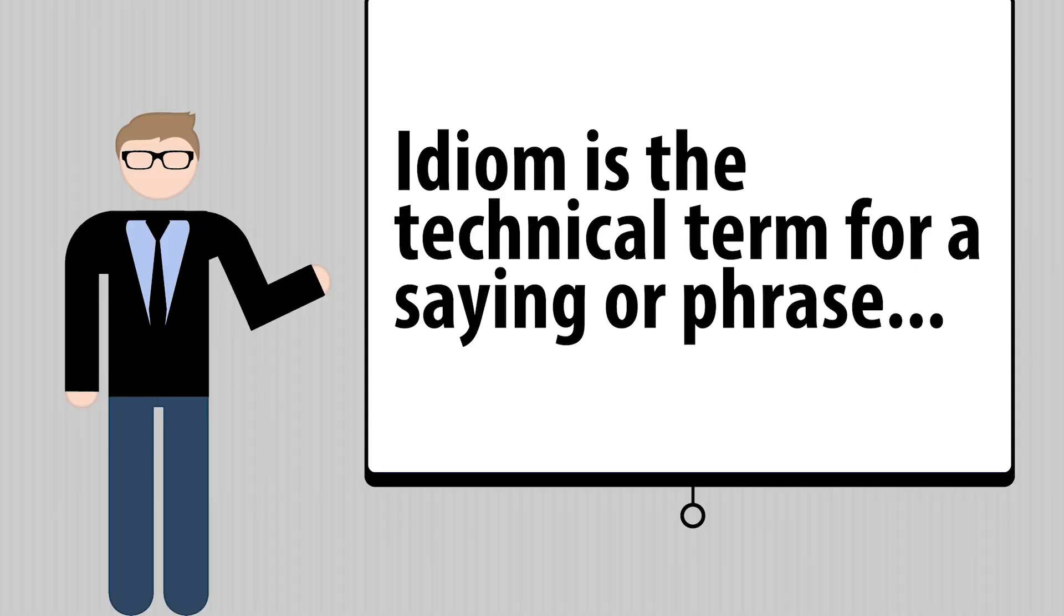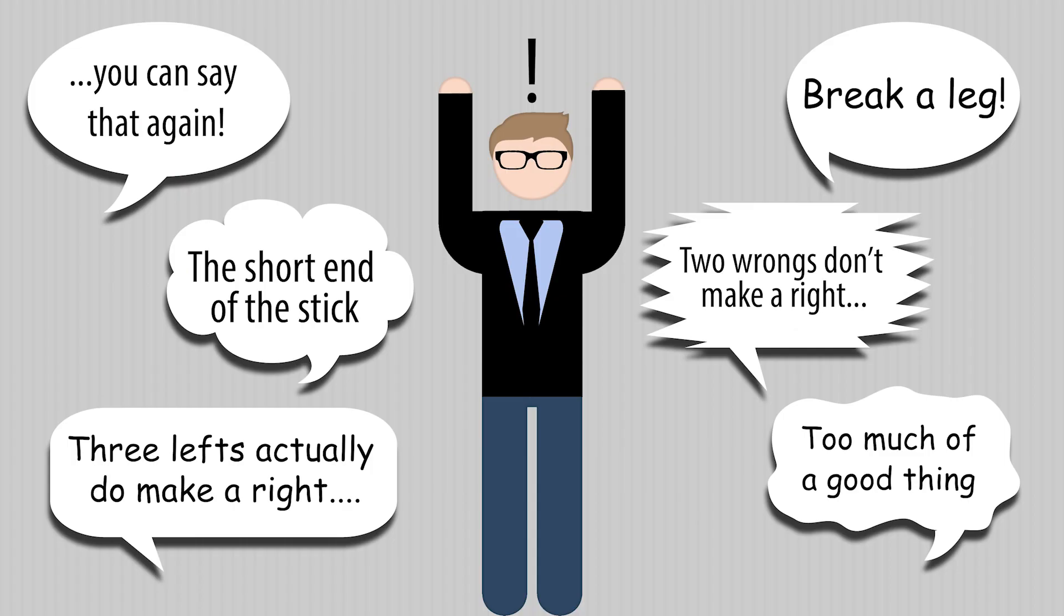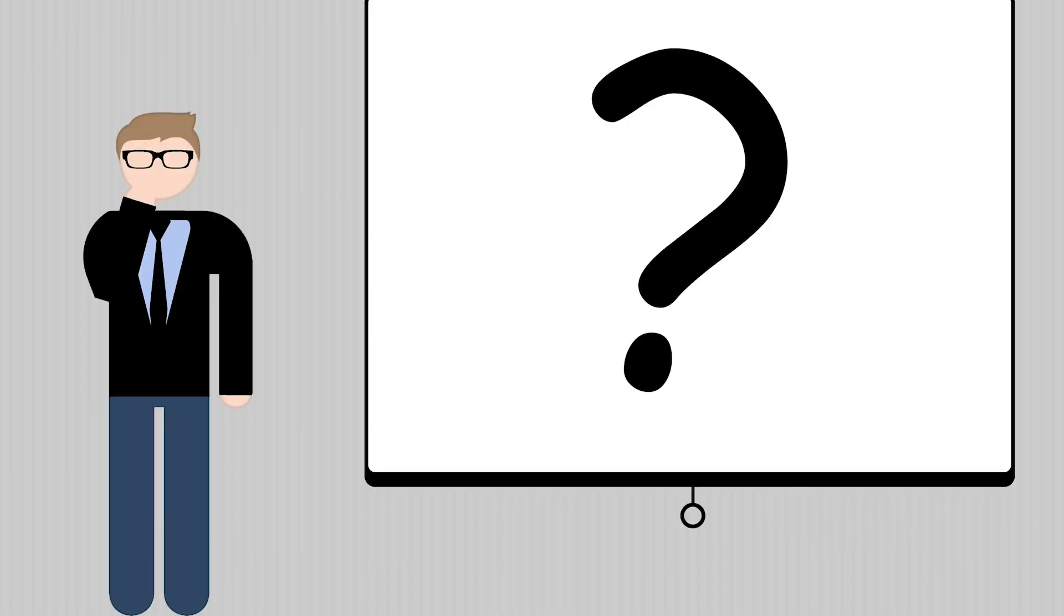What is an idiom? An idiom is the technical term for a saying or phrase, and they are everywhere. We use them all the time in language, so where do idioms come from?